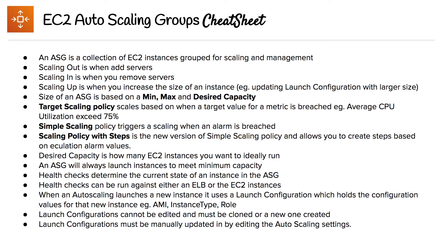Here we can review the auto scaling group cheat sheet. An ASG is a collection of EC2 instances grouped for scaling and management. Scaling out is when you add servers, scaling in is when you remove servers, and scaling up is when you increase the size of an instance — for example, updating the launch configuration with a larger instance size.